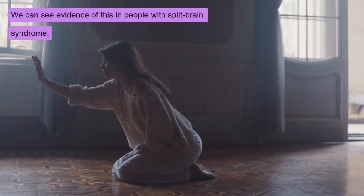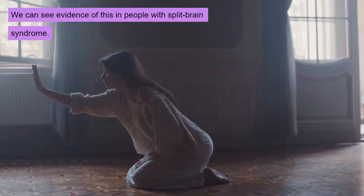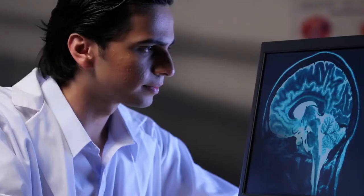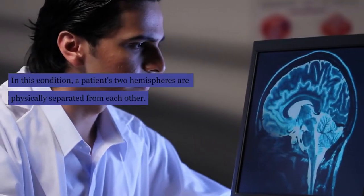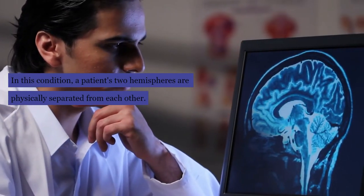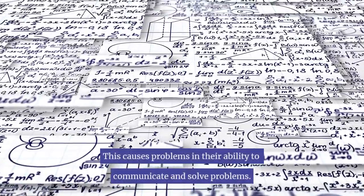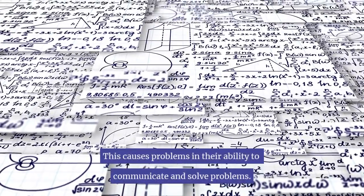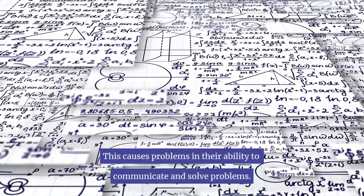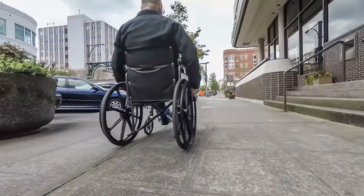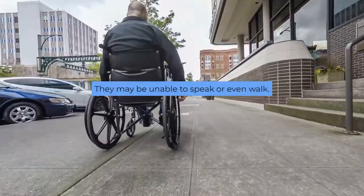We can see evidence of this in people with split brain syndrome. In this condition, a patient's two hemispheres are physically separated from each other. This causes problems in their ability to communicate and solve problems. They may be unable to speak or even walk.